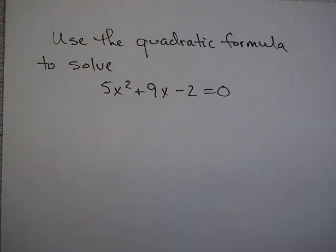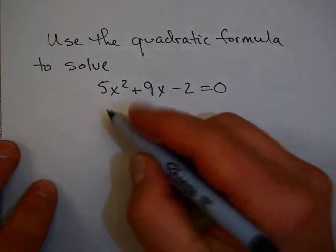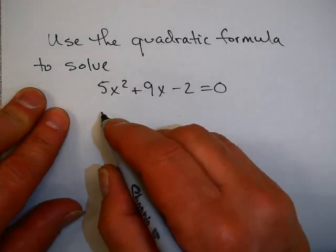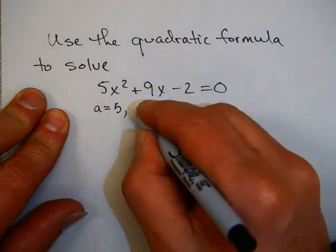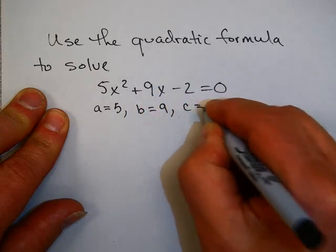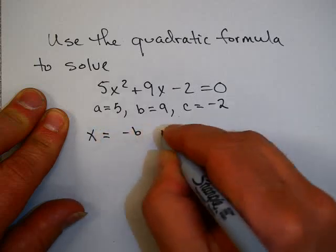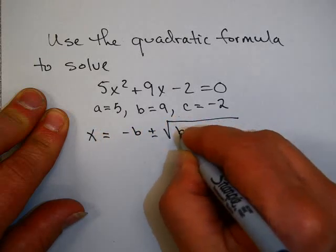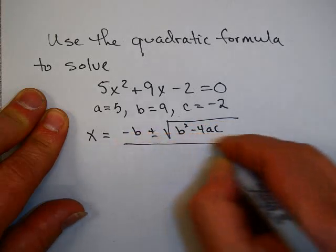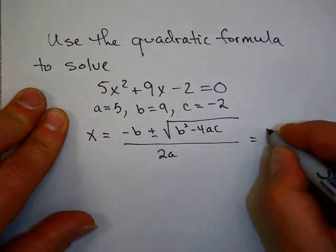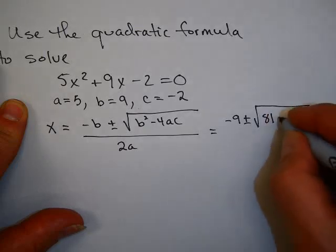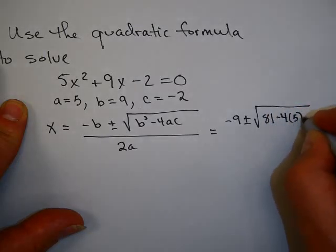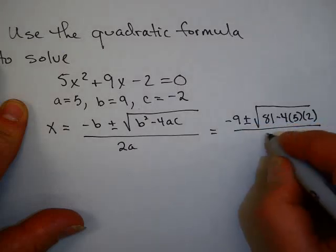You don't always get complex conjugate solutions, so let's use the quadratic formula to solve the next problem. Pause the video and try it yourself first. In this case, a = 5, b = 9, c = −2. So x = (−9 ± √(9² − 4·5·(−2))) / (2·5), which is (−9 ± √(81 + 40)) / 10.